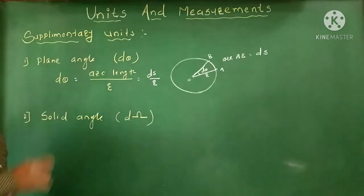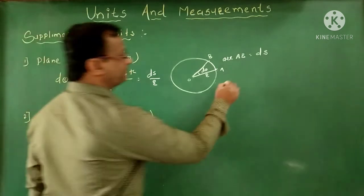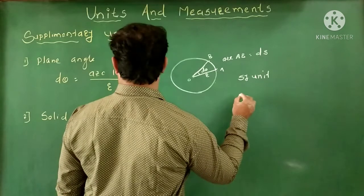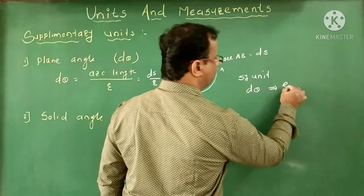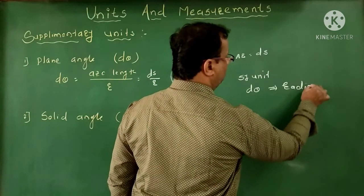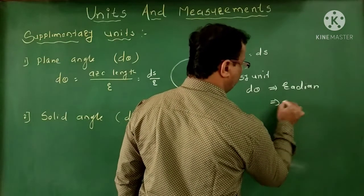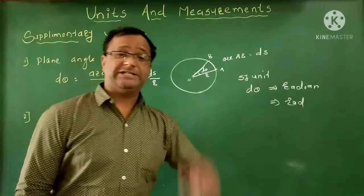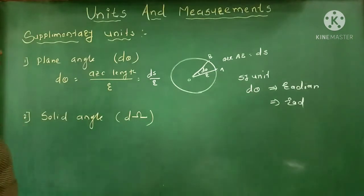The unit of the plane angle dθ is radian, and its symbol is 'rad'. So the SI unit of the plane angle is radian, represented by the symbol rad.